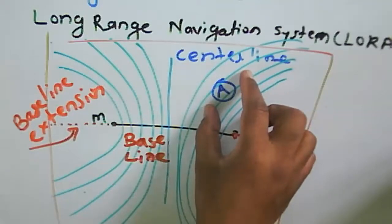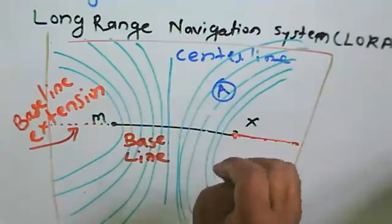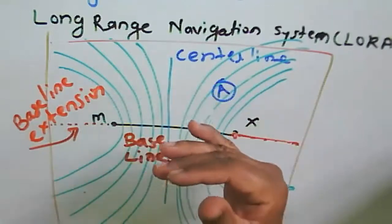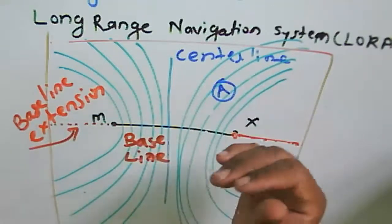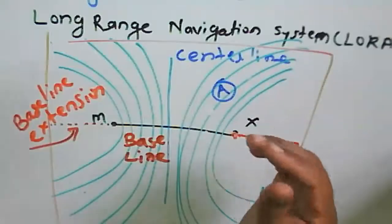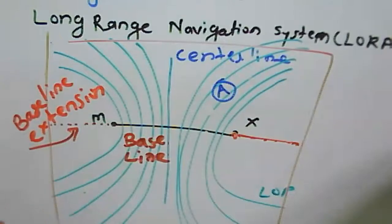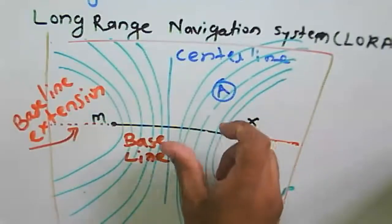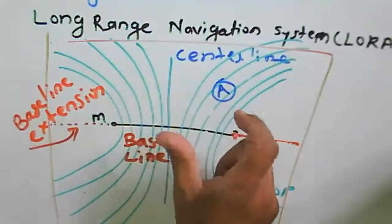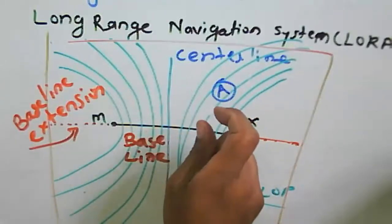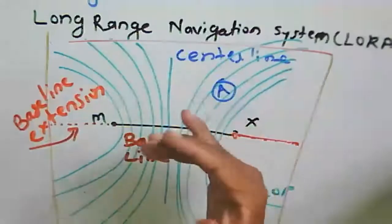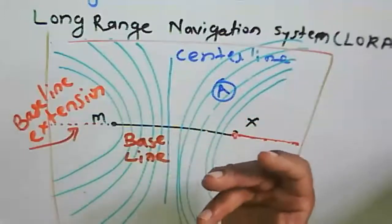LORAN C is the most accurate version. The operation is based on the hyperbolic system: the locus of points defines a constant difference in distance between an observer point and two separate stations. A mathematical function defines the space, and from this the position or location is determined.